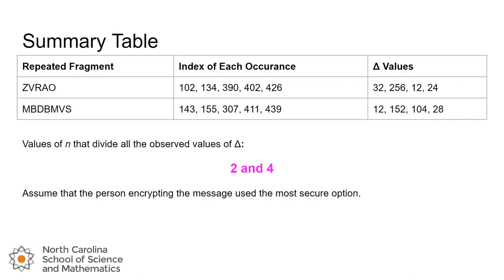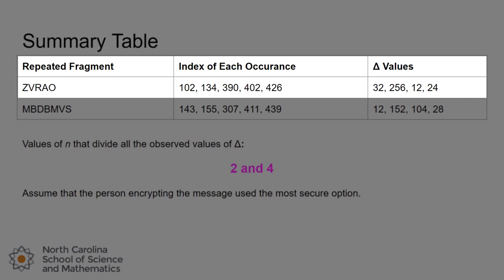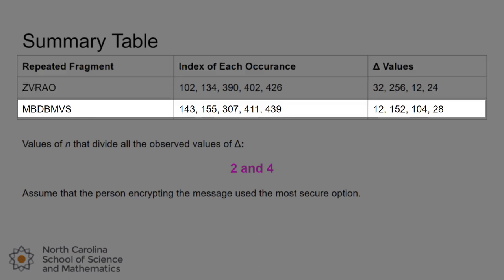And I find it usually pretty helpful to put this on a table. So we've got our repeated fragments, the indices of each occurrence of the fragment, and then I calculated those delta values. So just looking at zvrao, the first occurrence is at 102, the next one was at 134, so the first delta value is 32. They were 32 characters apart. And then between 134 and 390 was 256 apart, and then 12 and 24 respectively. And then for the second fragment, the mbdbmvs, those delta values you get are 12, 152, 104, and 28.